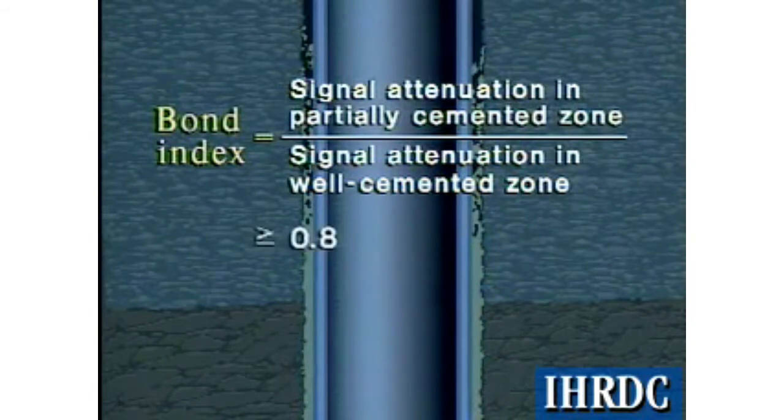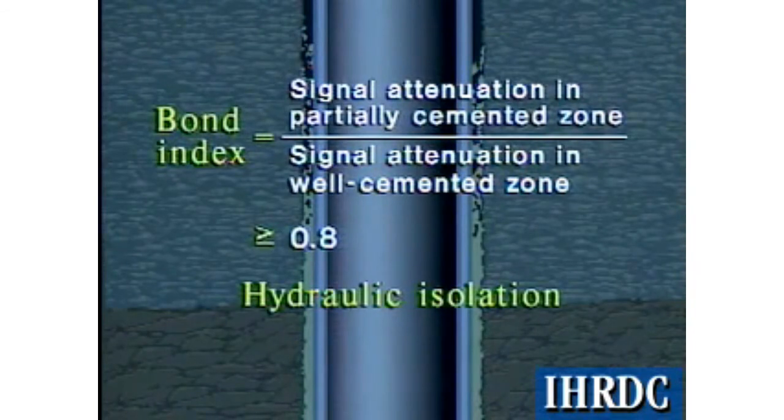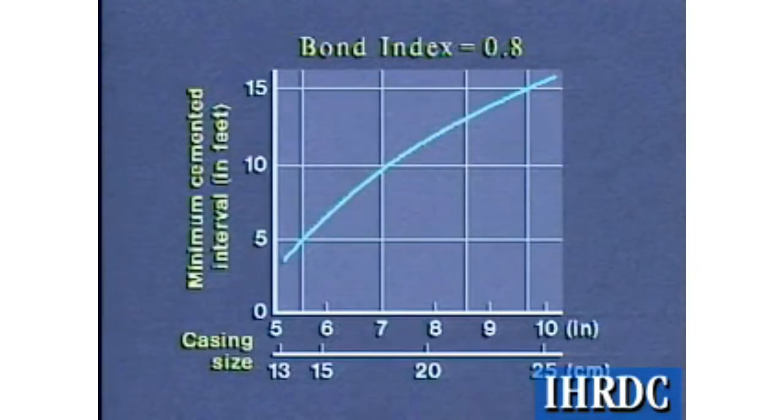If the bond index is 0.8 or better over an interval of pipe, a reasonable assurance of hydraulic isolation is possible. The interval length of 0.8 bond index required for a variety of pipe sizes is anywhere from 5 to 15 feet, 1.5 to 4.6 meters. The larger the casing size, the longer the interval needed to ensure hydraulic isolation.